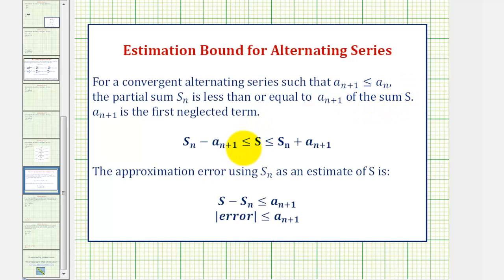So the infinite sum is always greater than or equal to this difference and less than or equal to the sum. So the approximation error when using the partial sum as an estimate of the infinite sum will be less than or equal to a sub n plus 1.